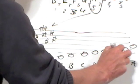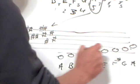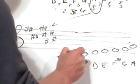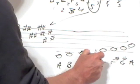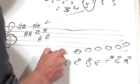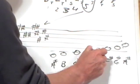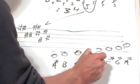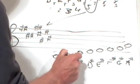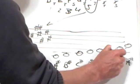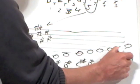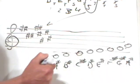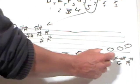Key signature. Father, Charles, goes, down, and, enters, battle, Father, Charles. And I've come to the seventh note with the extra double sharp there on the G for goes.